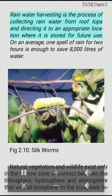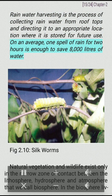Did you know? Rainwater harvesting is the process of collecting rainwater from rooftops and directing it to an appropriate location where it is stored for future use. On an average, one spell of rain for two hours is enough to save 8,000 liters of water.